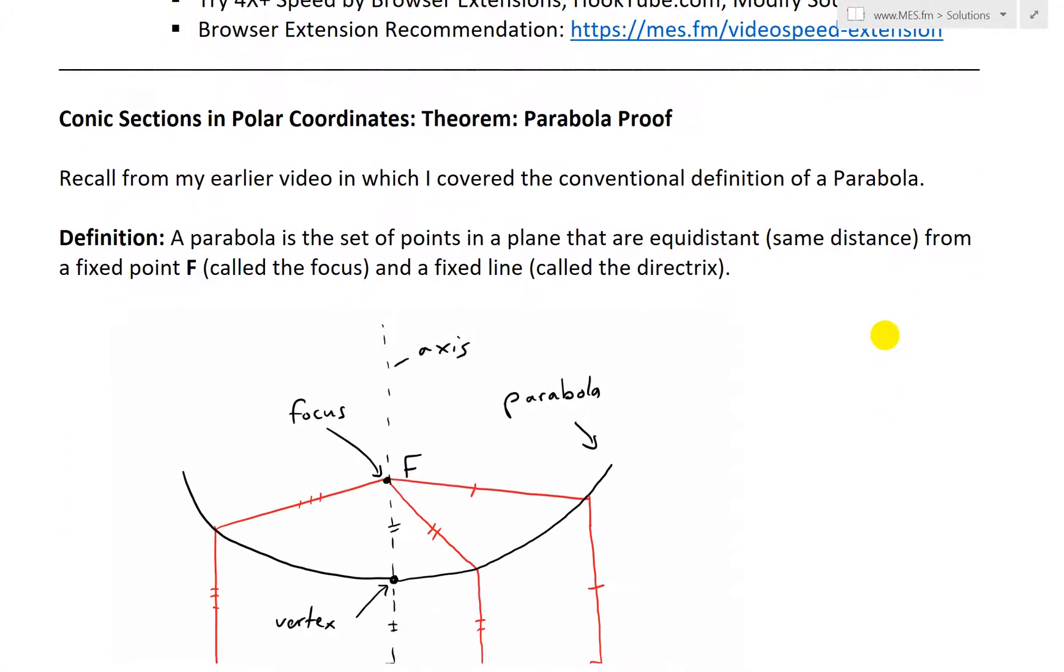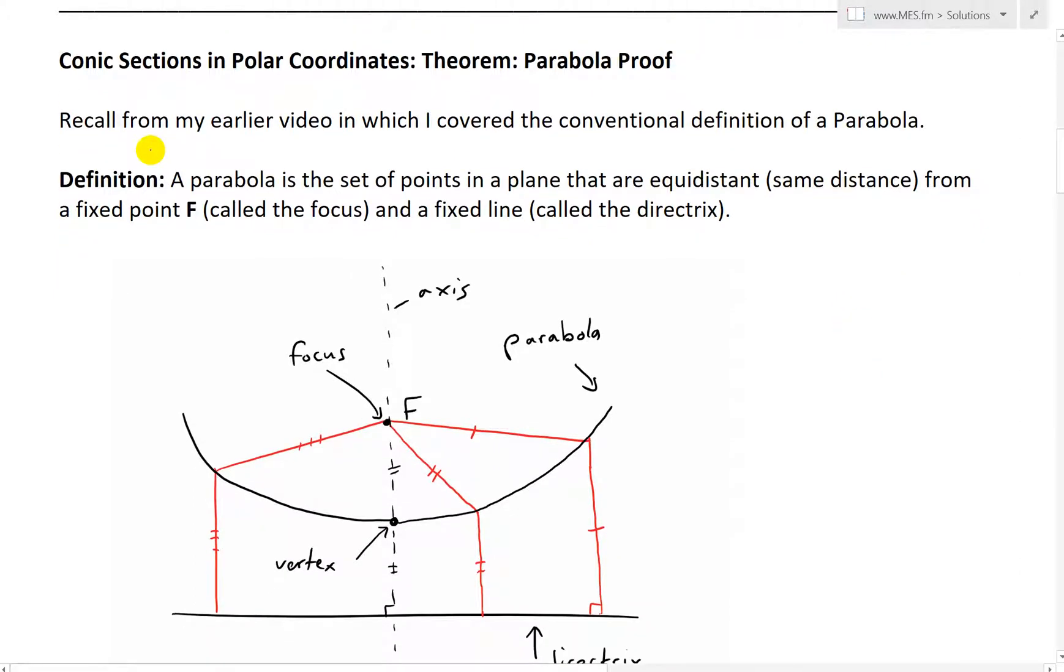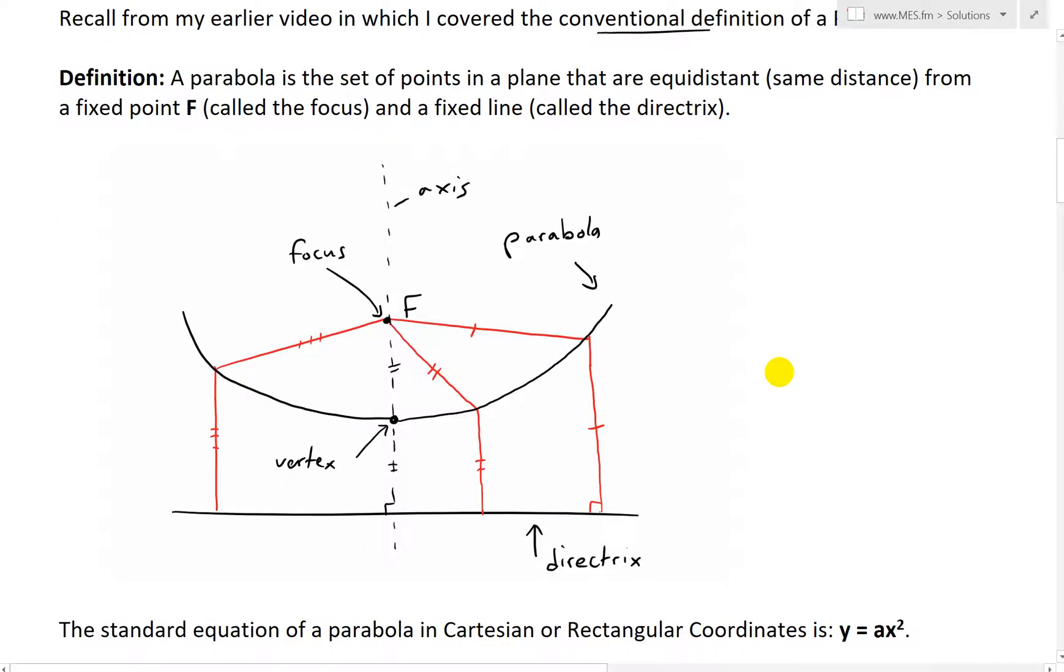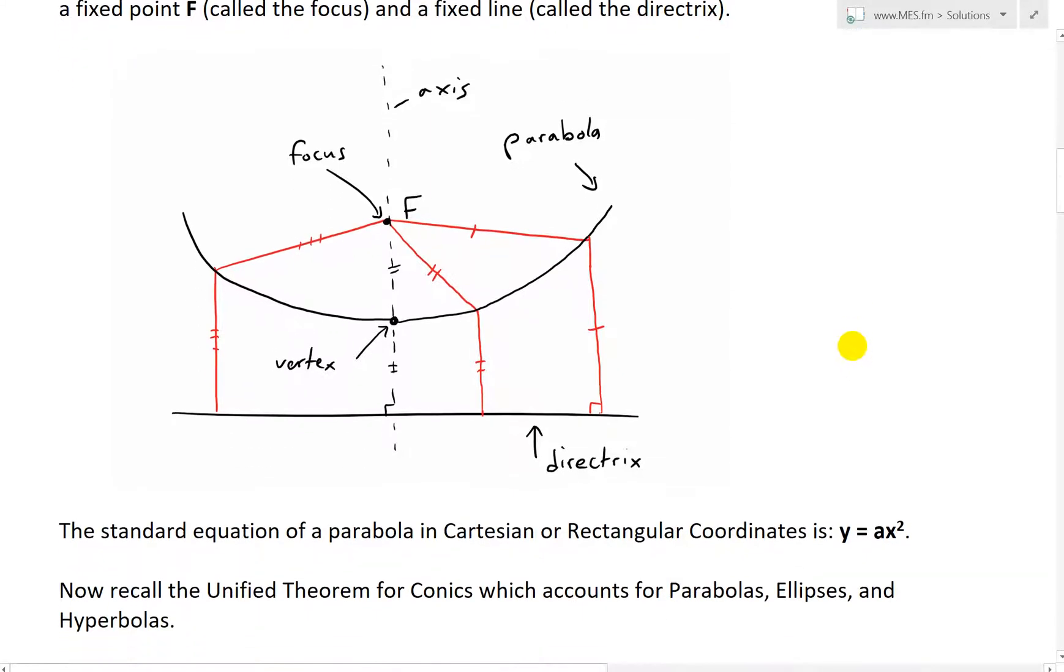So let's just quickly recap on a couple things. Recall from my earlier video in which I covered the conventional definition of a parabola. Definition of a parabola is the set of points in a plane that are equidistant or same distance from a fixed point F called the focus and a fixed line called the directrix. So for example, if this is the parabola, the set of all these points across like this, then there has to be a point called the focus and a line called the directrix, where any point you go is always the same distance. So here, from this point to this,